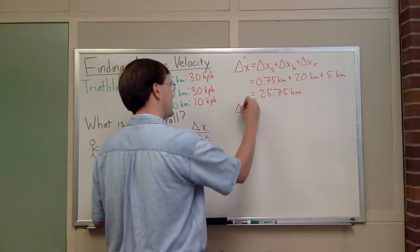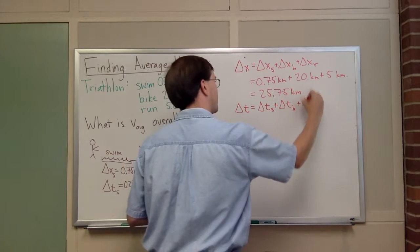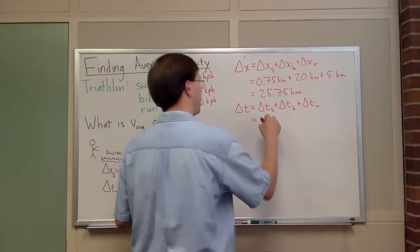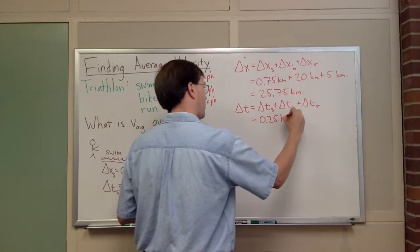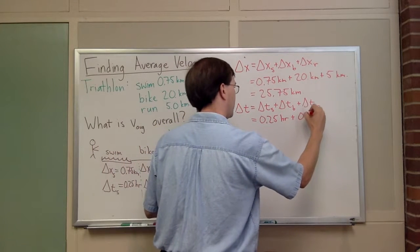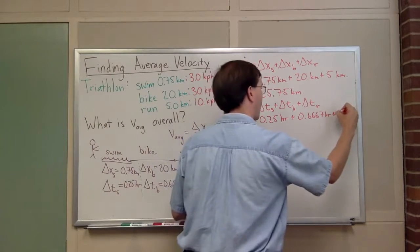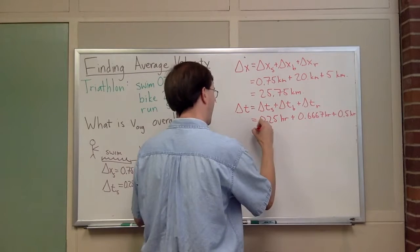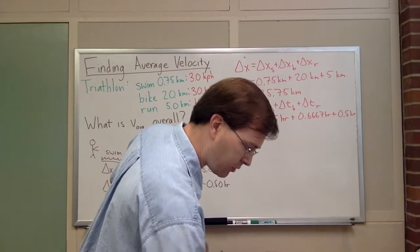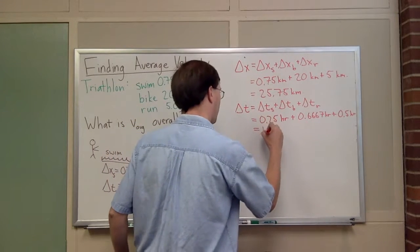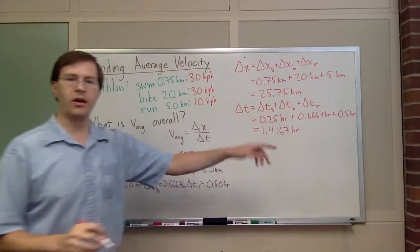My delta t is going to be the same idea. It's going to be delta t swim plus delta t bike plus delta t run. That's going to come out to be my delta t's: I have my quarter hour plus my two-thirds of an hour, plus my 0.5, my half an hour. When I add all that up, it comes out to be 1.4167 hours.